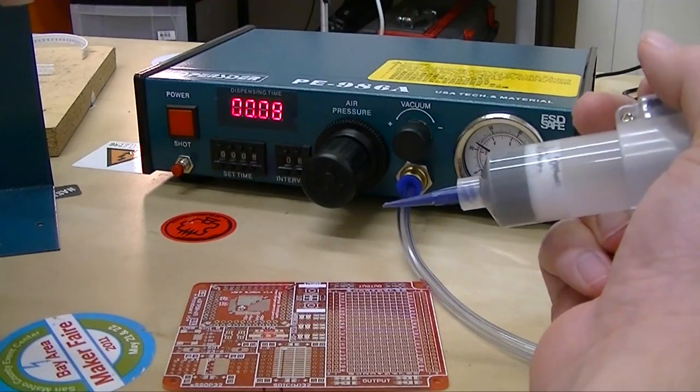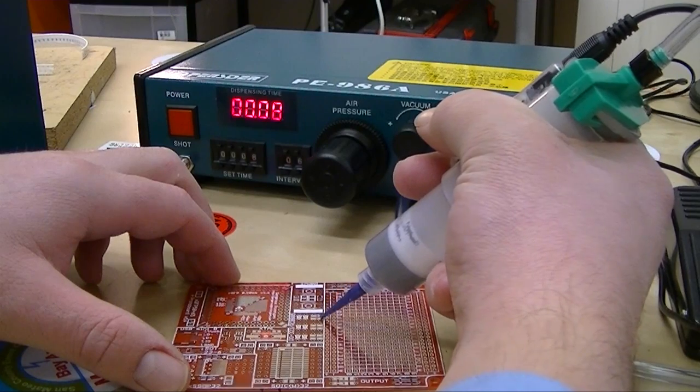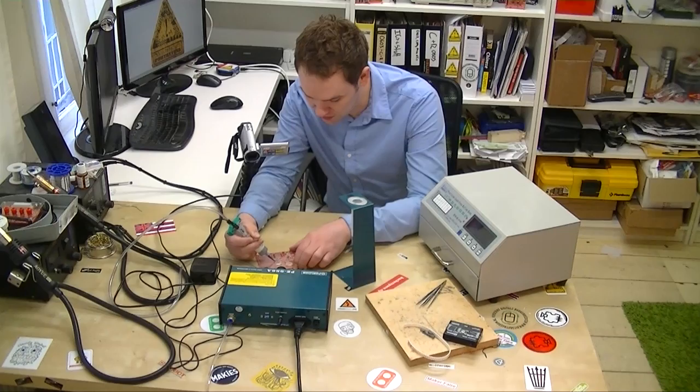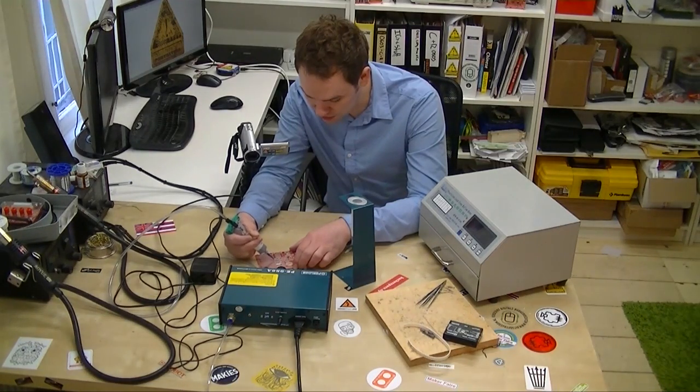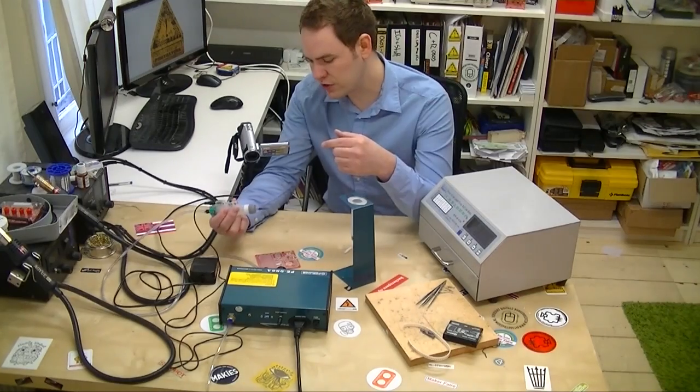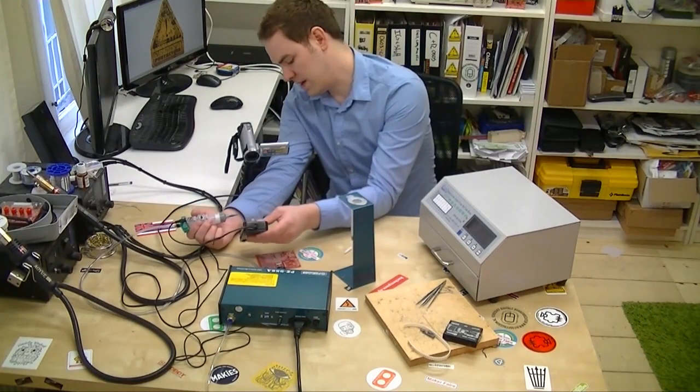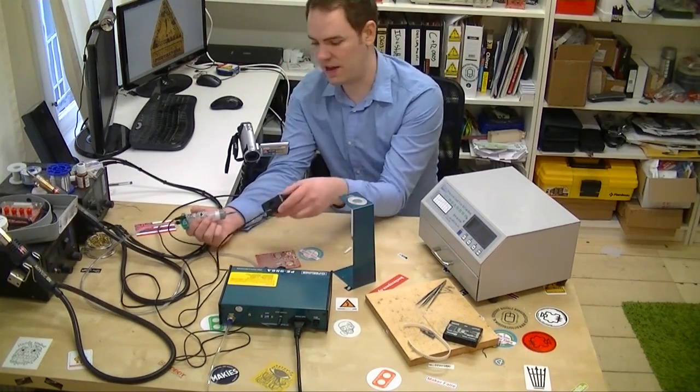This is the solder paste dispenser. What it does is it dispenses little dots of solder onto a circuit board. They're precisely measured, and it can also do incremental repeats. You either trigger it by holding down a button like this, or it also comes with a foot pedal that you can step on like that.